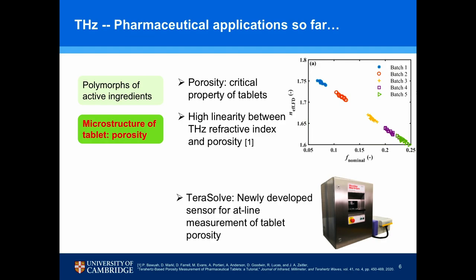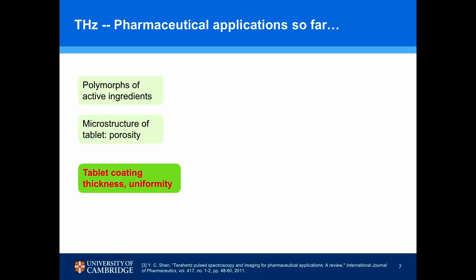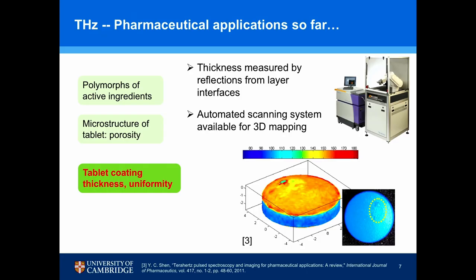There is already a recently developed system called TeraSoft that can be used as an at-line sensor for tablet porosity. Next, Terahertz can also be used to measure the thickness of the tablet's coating — the same concept as using Terahertz to inspect car paints or artworks. Basically, Terahertz gives rise to reflection peaks from buried layer interfaces. There is also an automated scanning system available for scanning whole tablets and giving a 3D mapping of thickness, so you can easily see defects on the coating and check coating uniformity.